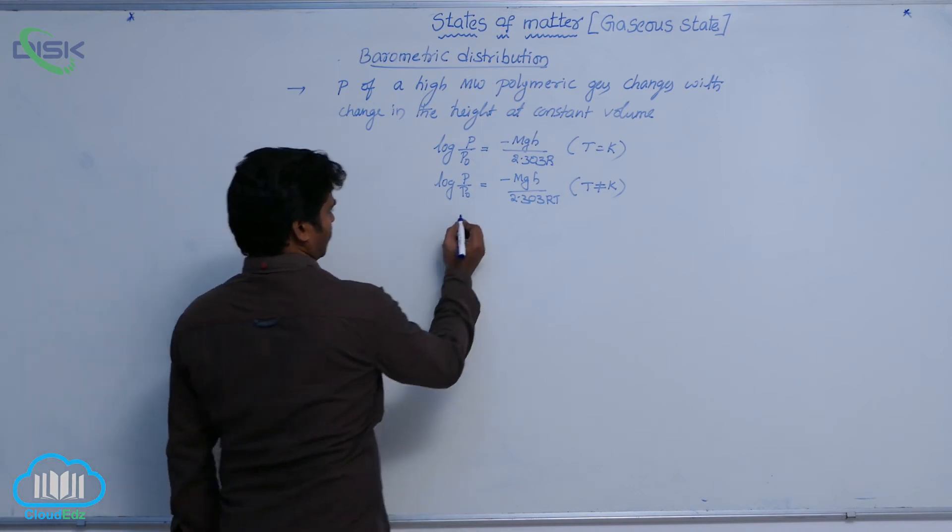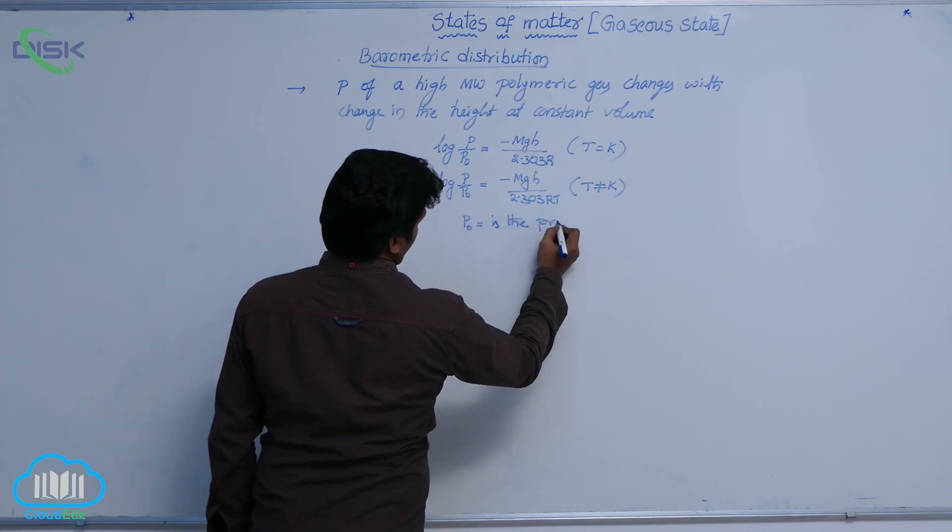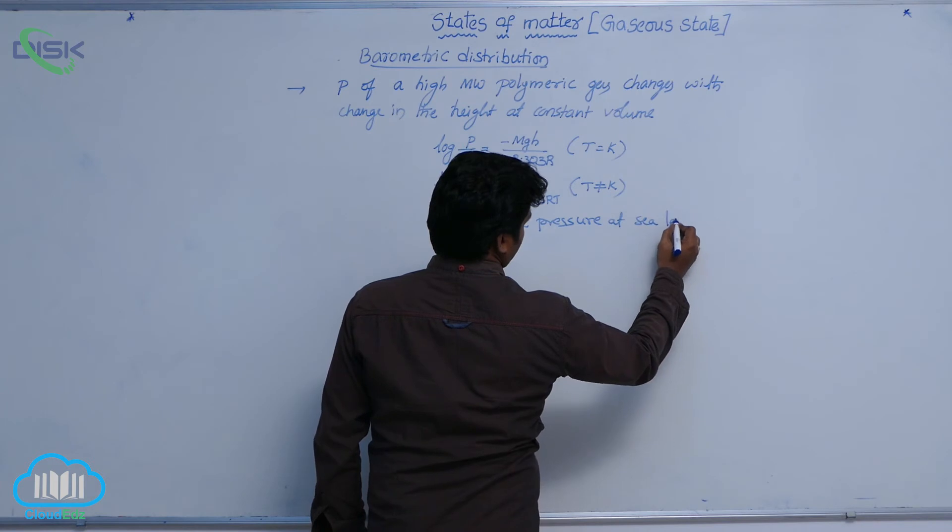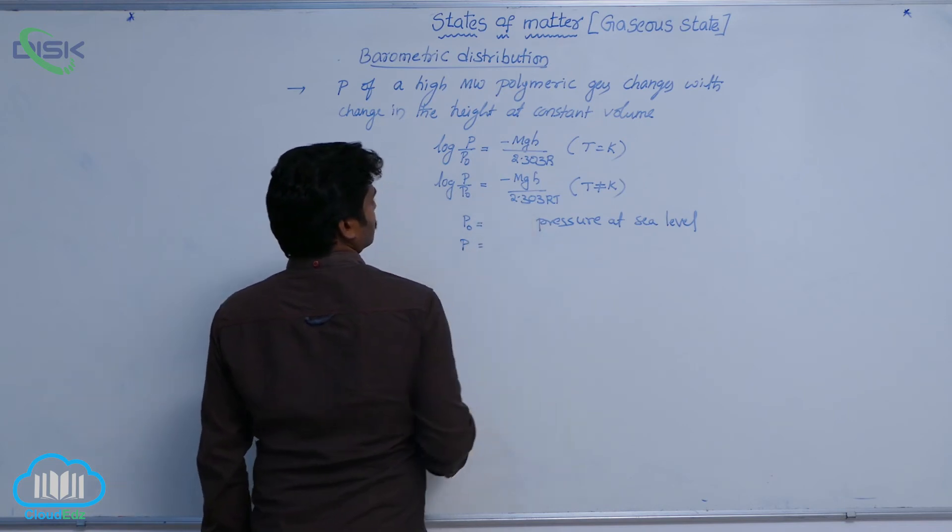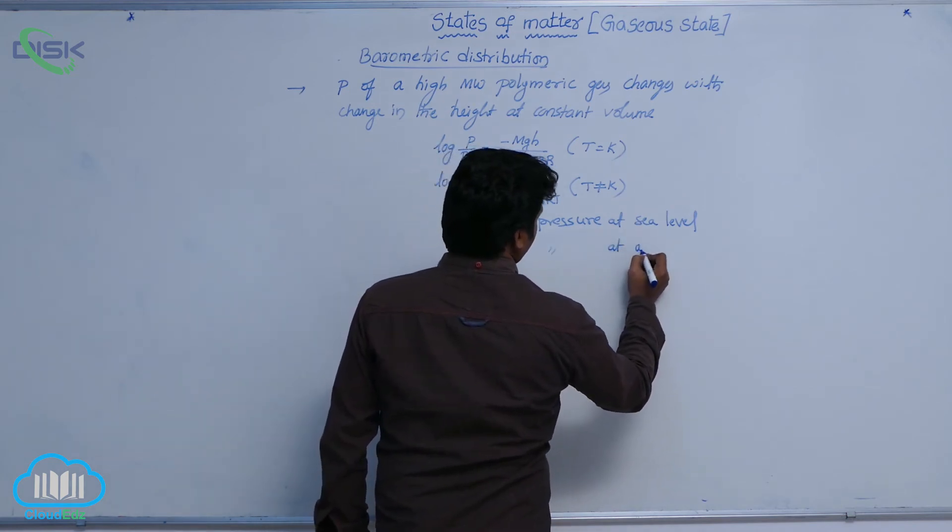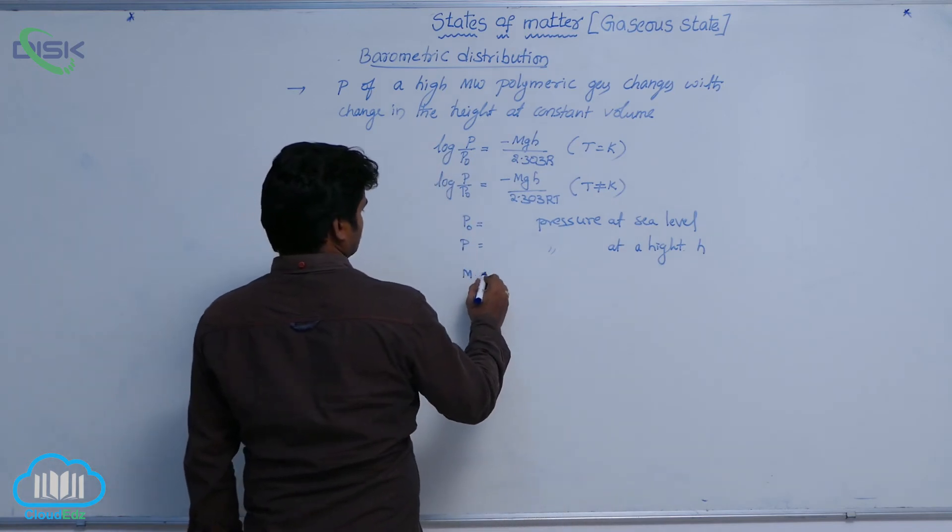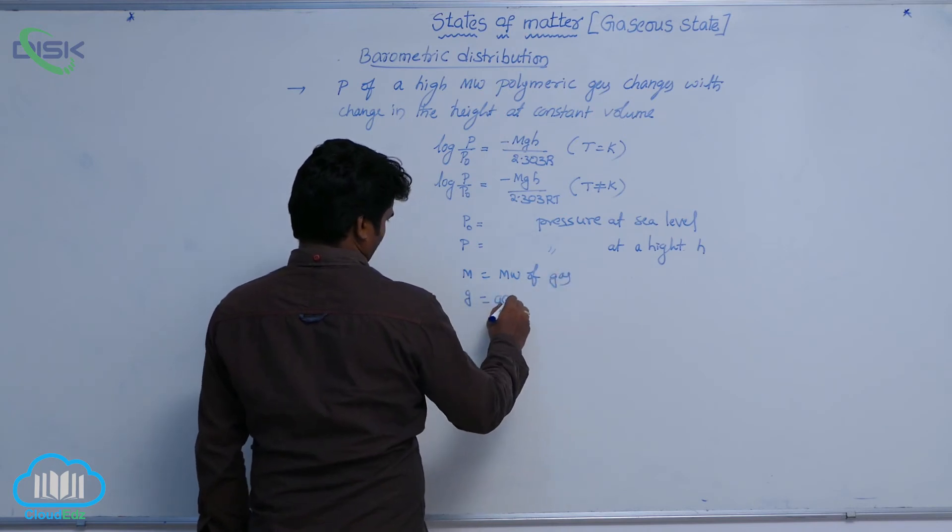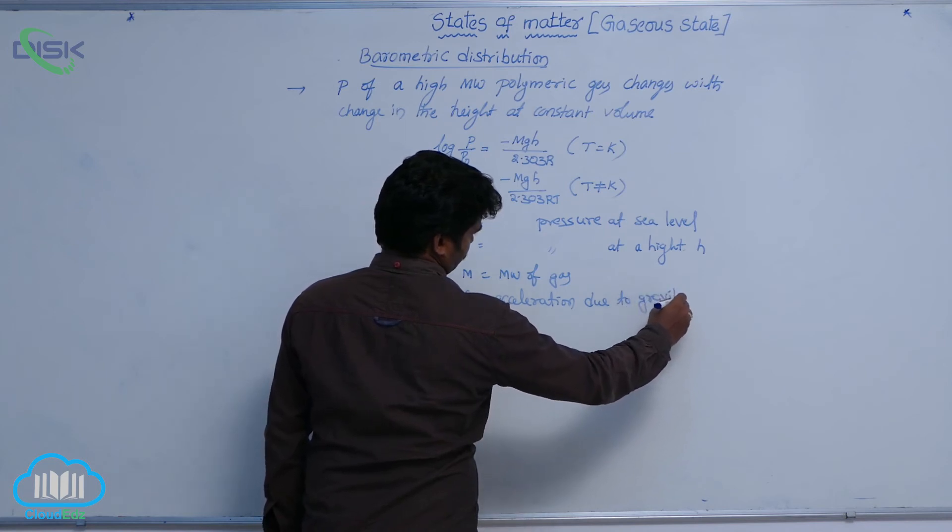See, in this, the terms involved are P naught is the pressure at sea level, where P is pressure at a height, pressure at a height H. Similarly, M is molecular weight of gas, G is acceleration due to gravity.